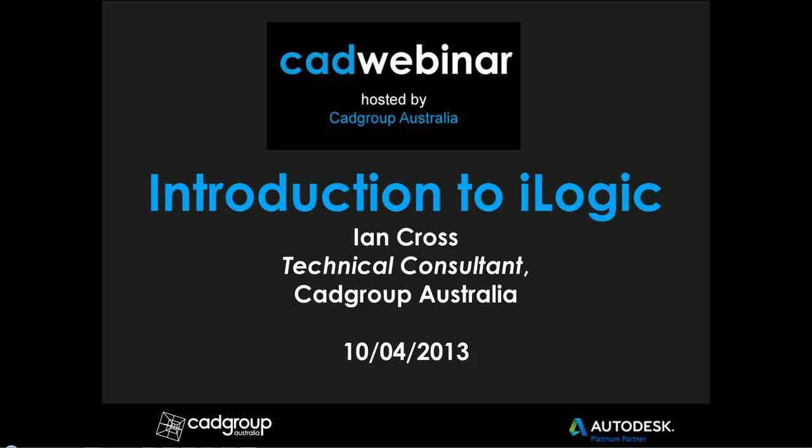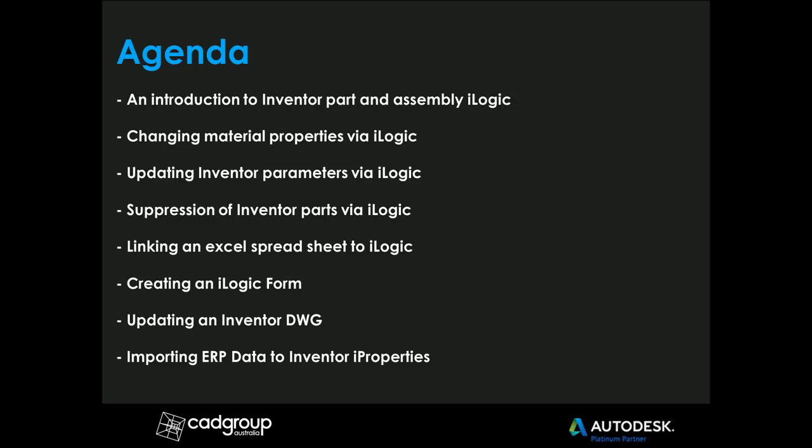Let's have a quick look at what will be covered today. The agenda will be Inventor's part and assembly iLogic. I have a basic Inventor part file which I'm going to modify using iLogic — changing some material properties and updating some of Inventor's parameters such as the height, width, and length of the part file. Once done in the part environment, I'll take that part into an assembly environment where other parts will react to the size change.